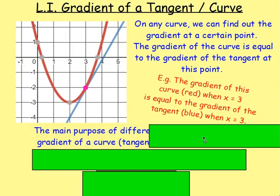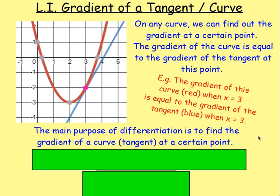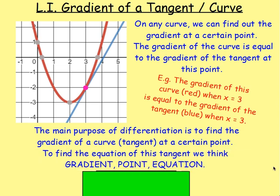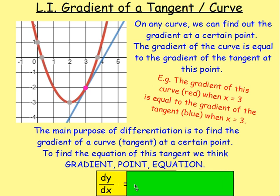The main purpose of differentiation — you might be thinking, why are we doing this? The main purpose is to find the gradient of a curve at a certain point. Once you've found that gradient, you can work out the gradient of the tangent as a straight line, thinking back to unit one when we learned about gradient point equation. So dy by dx equals the gradient.